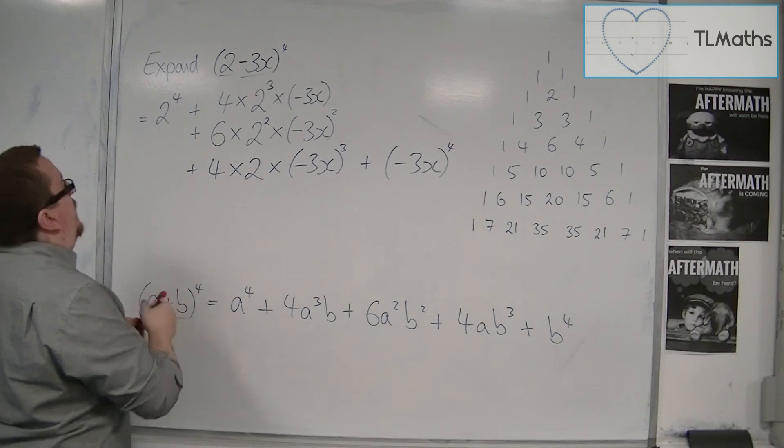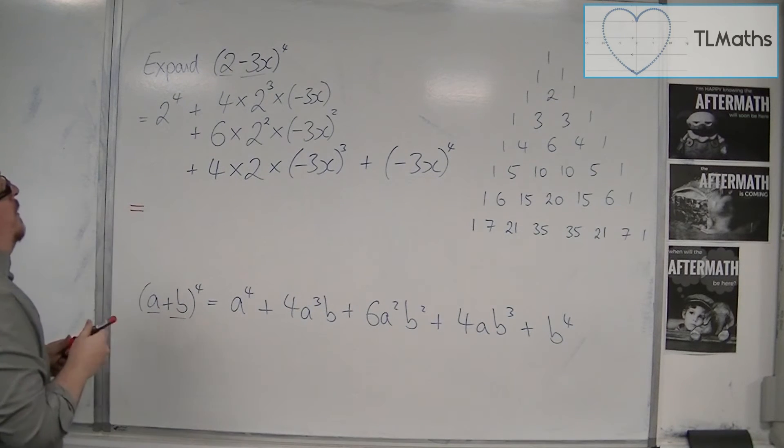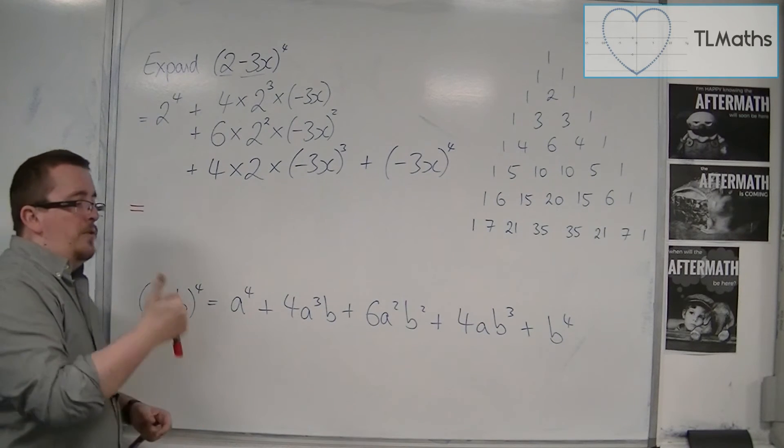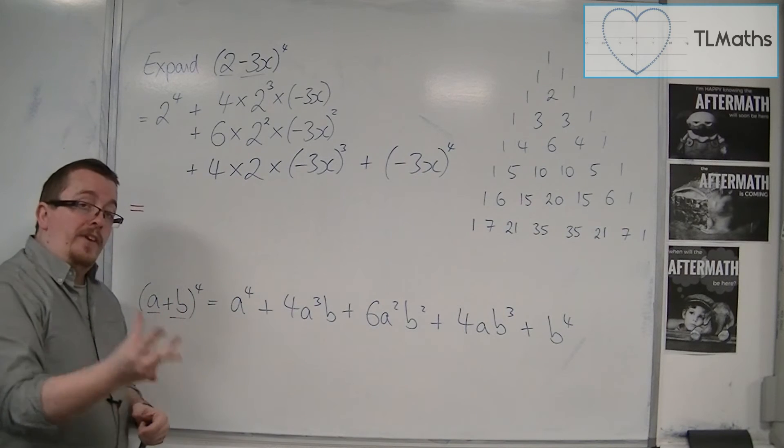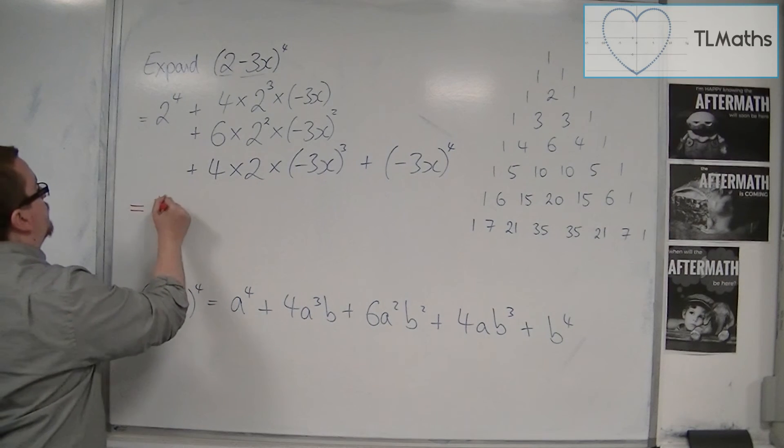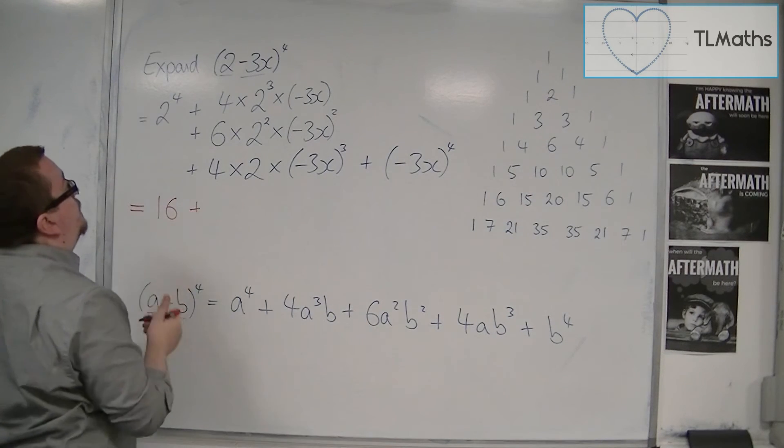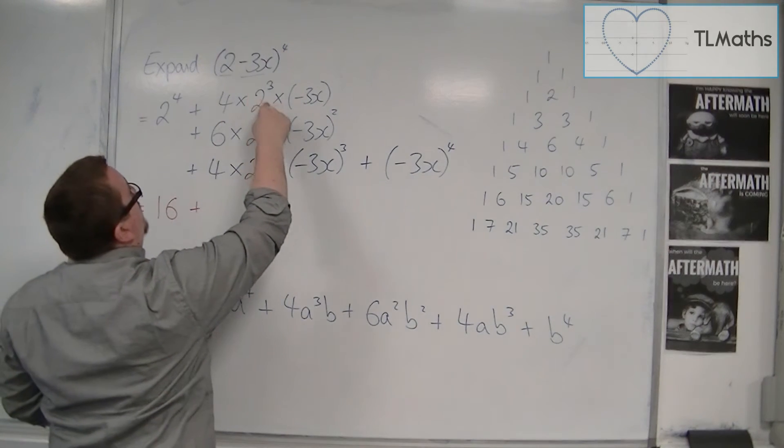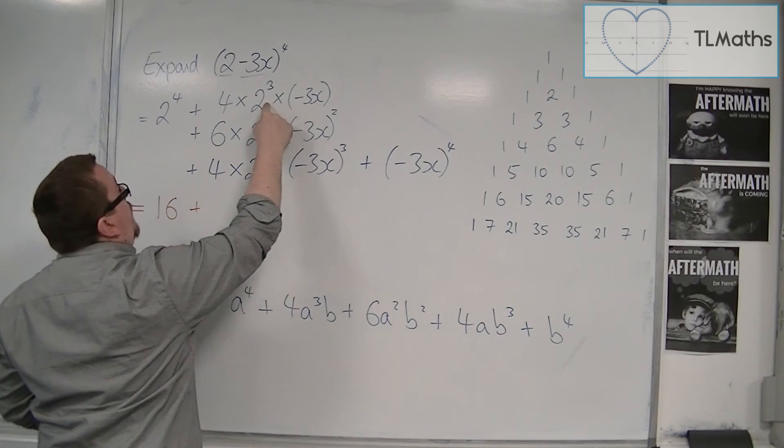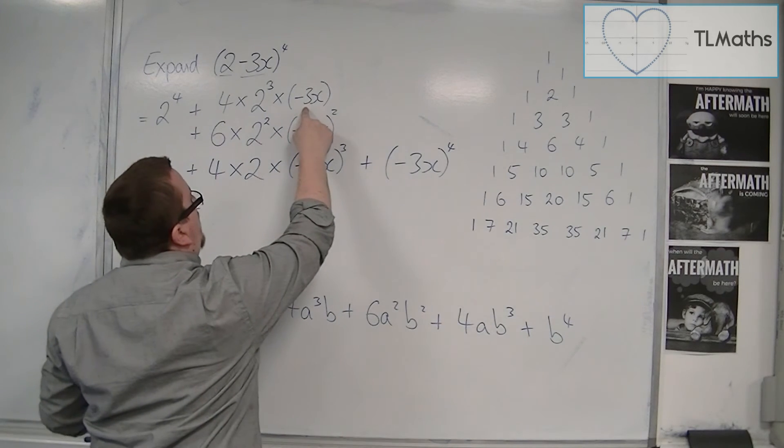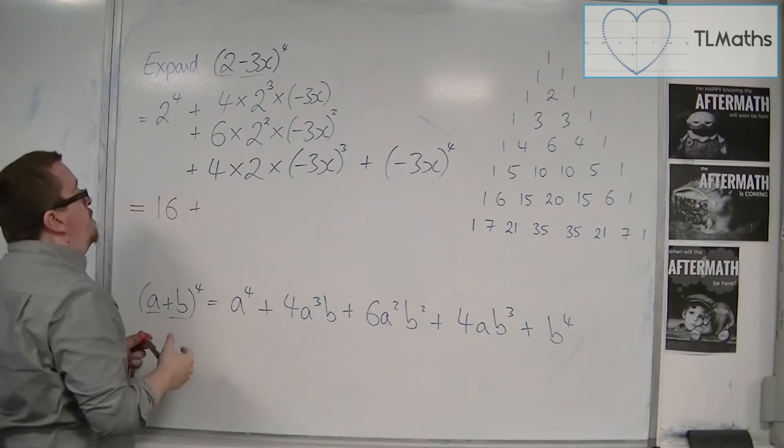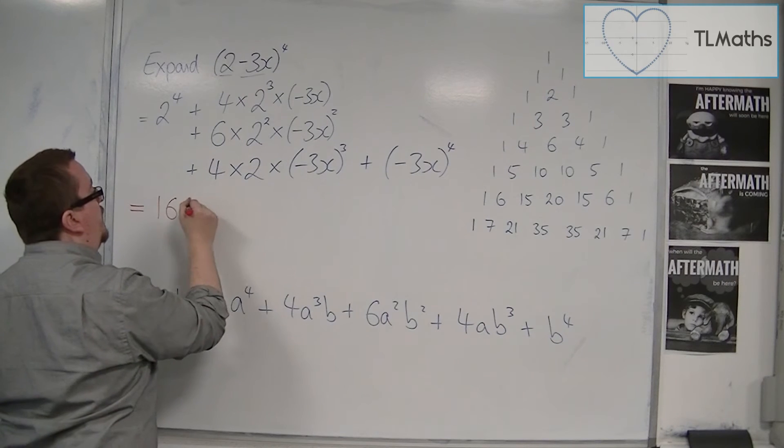So 2 to the power of 4, so 2, 4, 8, 16, plus 4 times 8, so 32, times by 3, is 96, so minus 96x because of that minus sign.